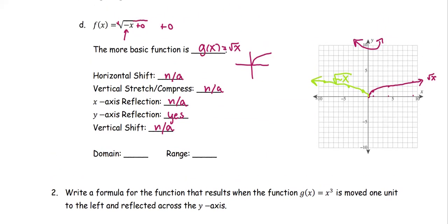The domain and range: in this case, the domain of the green curve is negative infinity to 0, including 0. The range is going to be from 0 to infinity.